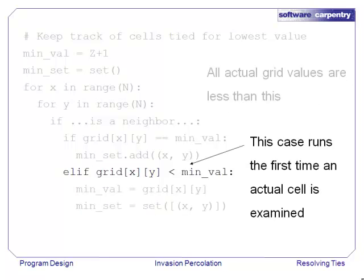This third case automatically runs the first time we look at any actual cell because we've initialized minval to be one greater than the maximum possible value in the grid.